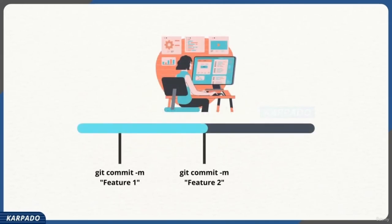You make progress in your project — for example, working on feature one — and when you feel you've done enough, you commit the project using the command 'git commit.' You then continue, work on another feature, and commit again with a meaningful message. If something goes wrong, Git allows you to go back to an earlier state of the project or revert a particular file to an earlier version. Just like a save is not a backup in a game, git commit is not a full backup — it takes a snapshot of your project at that particular instance in time.